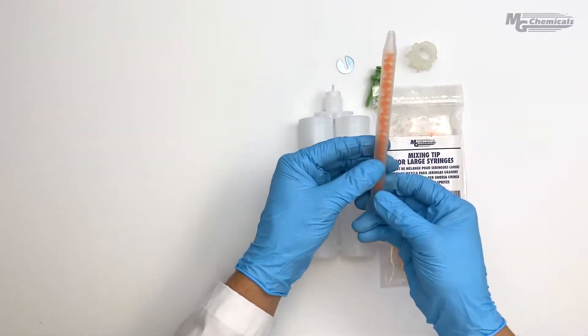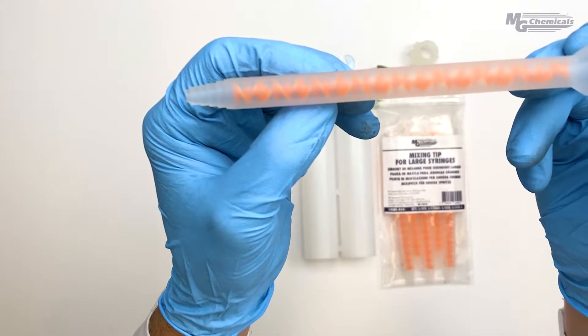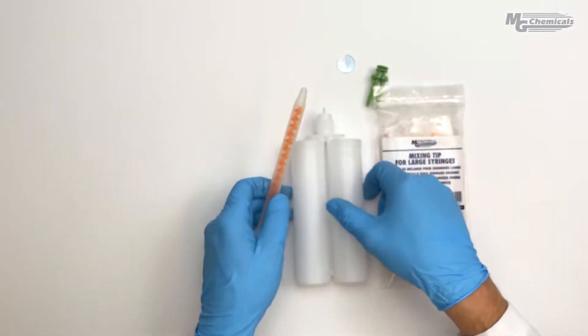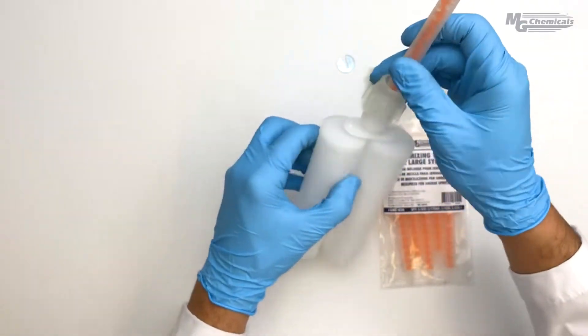A special mixing nozzle, 8MT-450, is required for this cartridge. To attach, slide the cap over the mixing tip then screw over nozzle to lock in place.